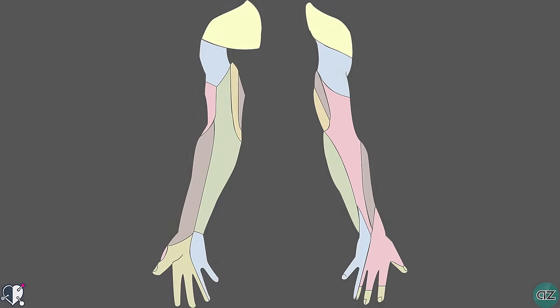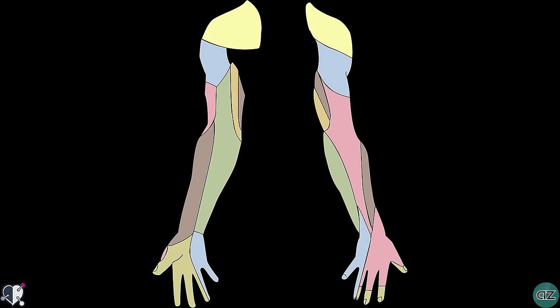With regard to sensory function, the radial nerve innervates most of the skin of the posterior side of the forearm and the dorsal surface of the lateral side of the palm and lateral three and a half digits. You can see the sensory distribution illustrated by the red shading in this diagram.